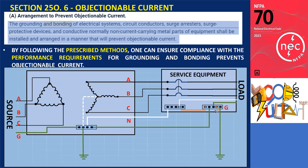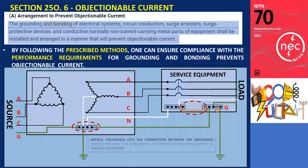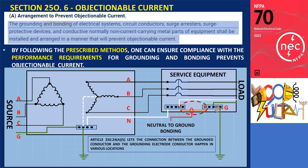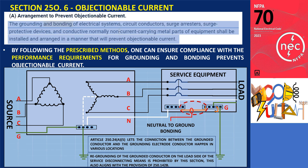Going back to the first example, where multiple bonds of neutral to ground were set up, Article 250.24A5 lets the connection between the grounded conductor and the grounding electrode conductor happen in various locations: on the supply side of the service disconnecting means, or within the enclosure of the service disconnecting means. Additionally, re-grounding of the grounded conductor on the load side of the service disconnecting means is prohibited by this section. This also aligns with the provision of 250.142B.